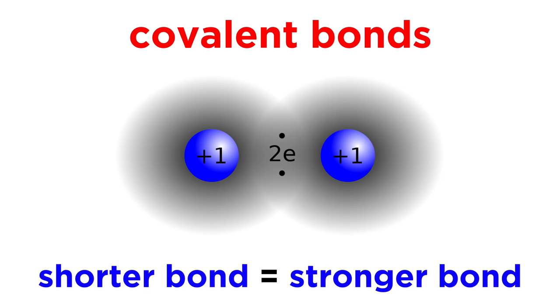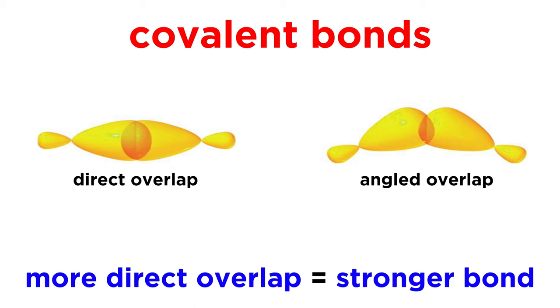This is why a shorter bond is a stronger bond, because it signifies greater orbital overlap. The same goes for direct overlap versus angled overlap. Direct overlap is more significant, and thus results in a stronger bond.